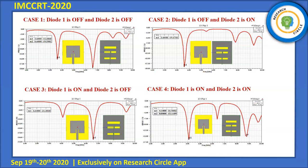What we observe is that whenever diode 2 is off, we obtain a resonant frequency at 6.6 GHz, and whenever diode 1 is off, we obtain a resonant frequency at 3.6 GHz. When both diodes are on — in forward bias condition — the opposition to current flow is less, so there is a lot of current distribution and thus we get two frequencies: 4.1 GHz and 8.8 GHz.